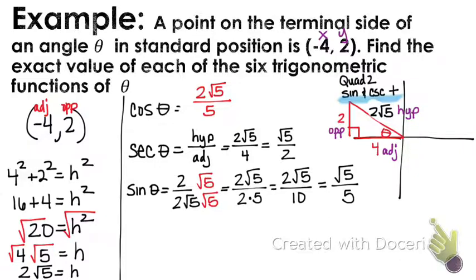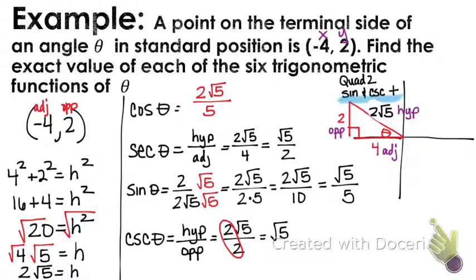So let's go ahead and do our sister for sine, which is cosecant. Cosecant of theta is hypotenuse over opposite. So the hypotenuse is 2 root 5. And the opposite is 2. This reduces to just a 1. So we end up with just the square root of 5. That's our final answer. You could also write it as the square root of 5 over 1 if that makes you feel better, you know. I would take either one of those for full credit.